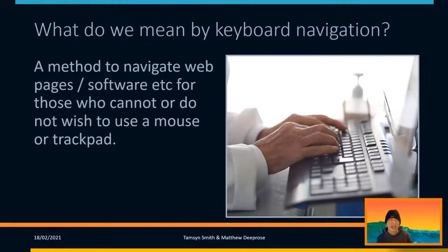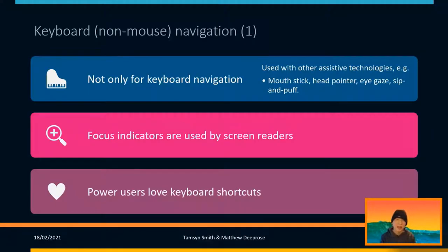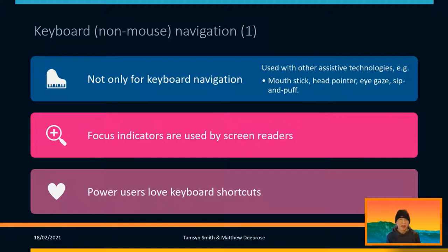As you have already agreed amongst yourselves, what we mean by using the keyboard is when we can't use the mouse, or we don't want to use a mouse or trackpad, that we have an alternative in the keyboard. The keyboard is not only for keyboard users, but it also unlocks some functionality that other assistive technologies use, like Sip and Puff, for example. The focus indicators we use when navigating by keyboard tend to also be used by screen readers or dictation software. Power users tend to love using keyboard shortcuts, and sometimes it's actually more effective to use the keyboard for training materials and so on.